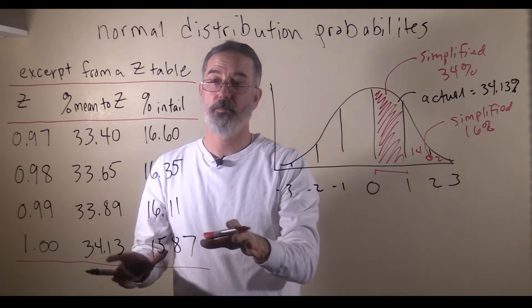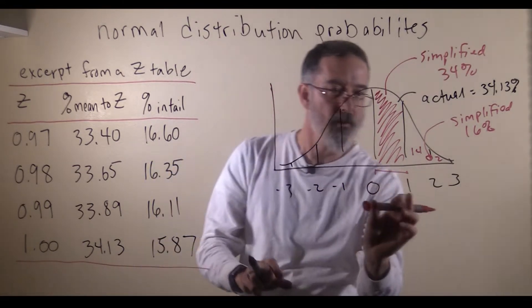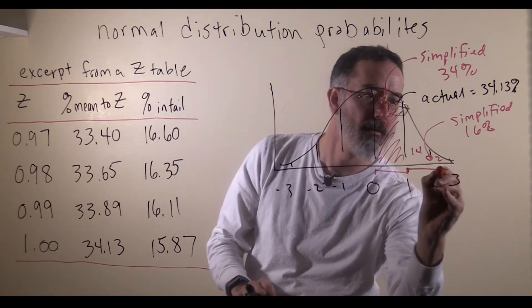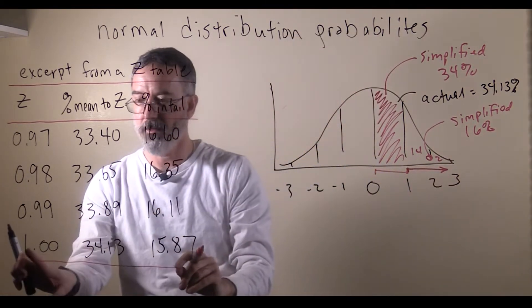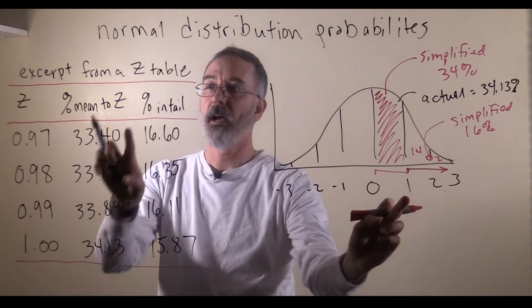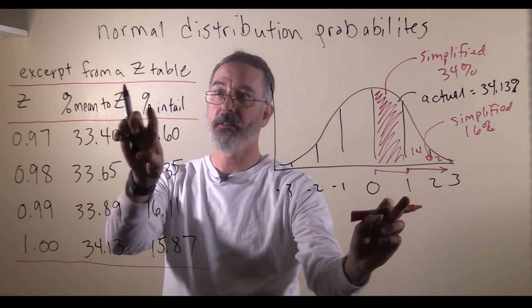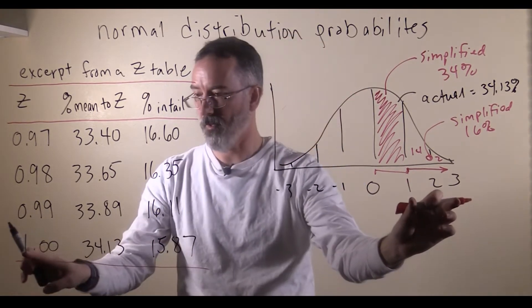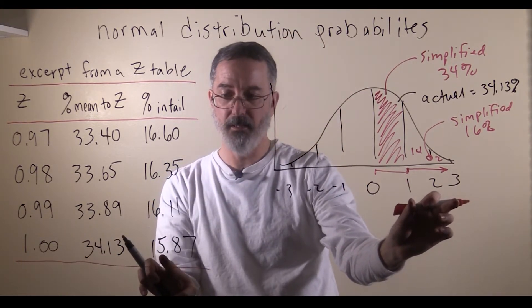But now, with the more precise z-table, what we can do is we find our z-score, and then go from that z out into the tail. So here is our z-score of 1, and now we are going to look at this column here called percent in tail. That is the percent for that z-score beyond that number.